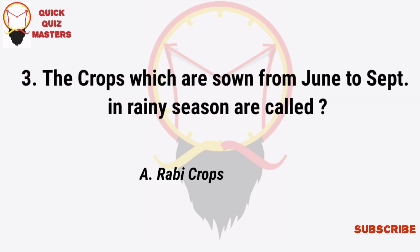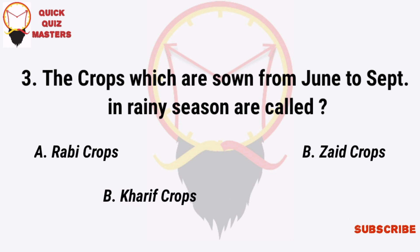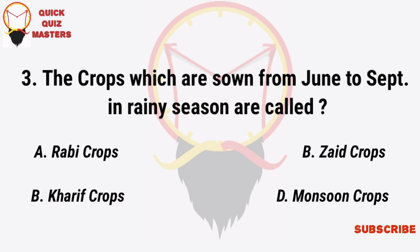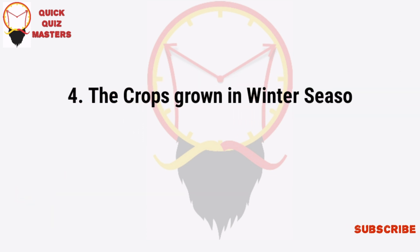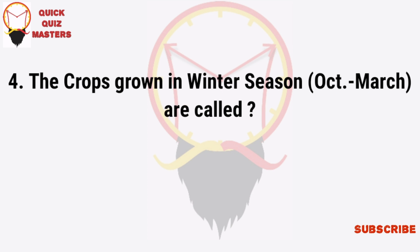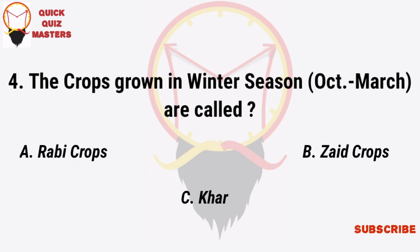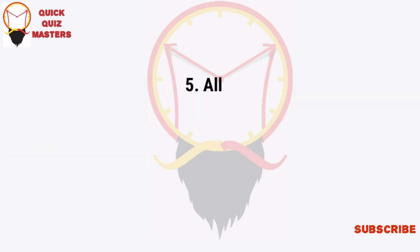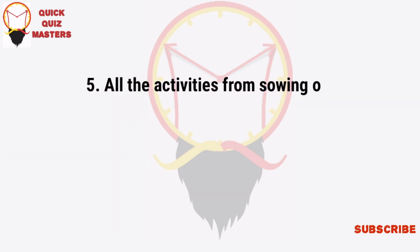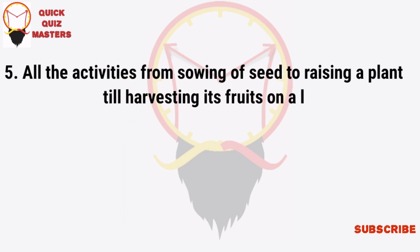The crops which are sown from June to September in the rainy season are called Rabi crops, Jade crops, Kharif crops, or monsoon crops. The crops grown in winter season, October to March, are called Rabi crops, Jade crops, Kharif crops, or winter crops.